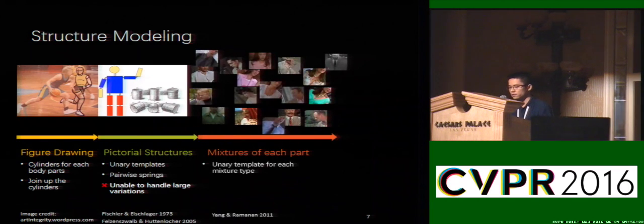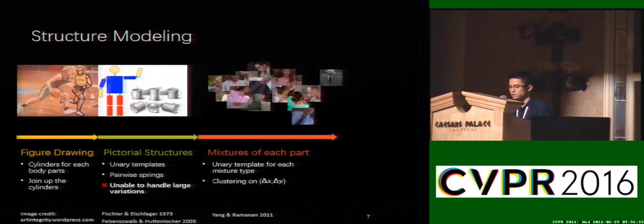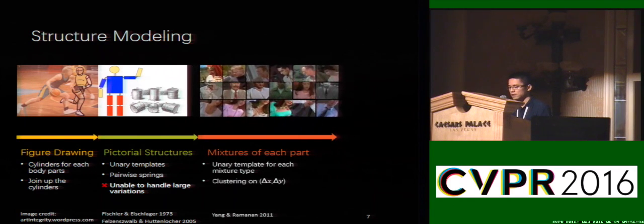To better handle the large variations, the mixture of parts model has been proposed. Each part is clustered into several mixtures according to its appearance, and each mixture has its own unary template for detection.